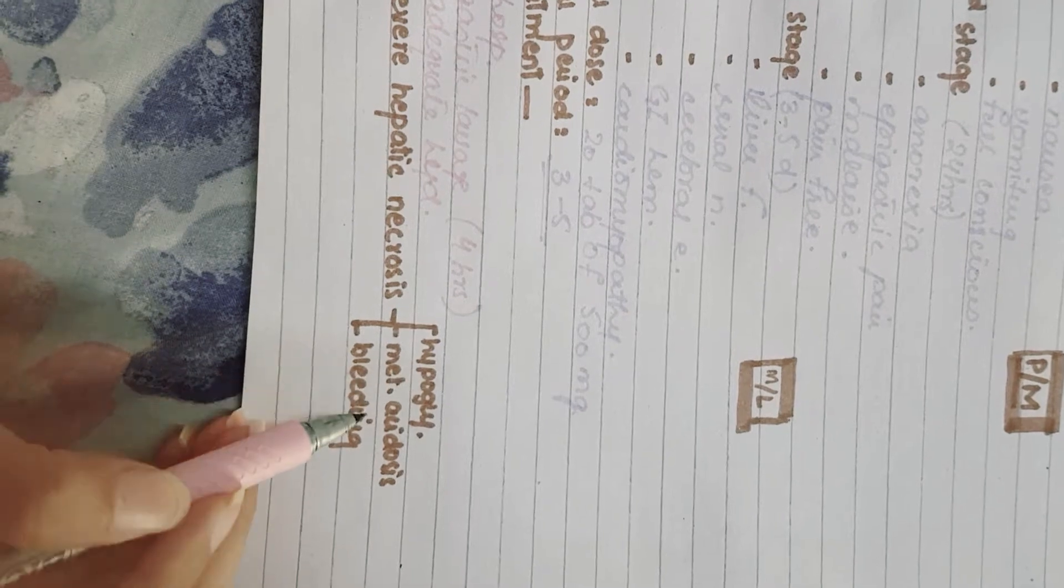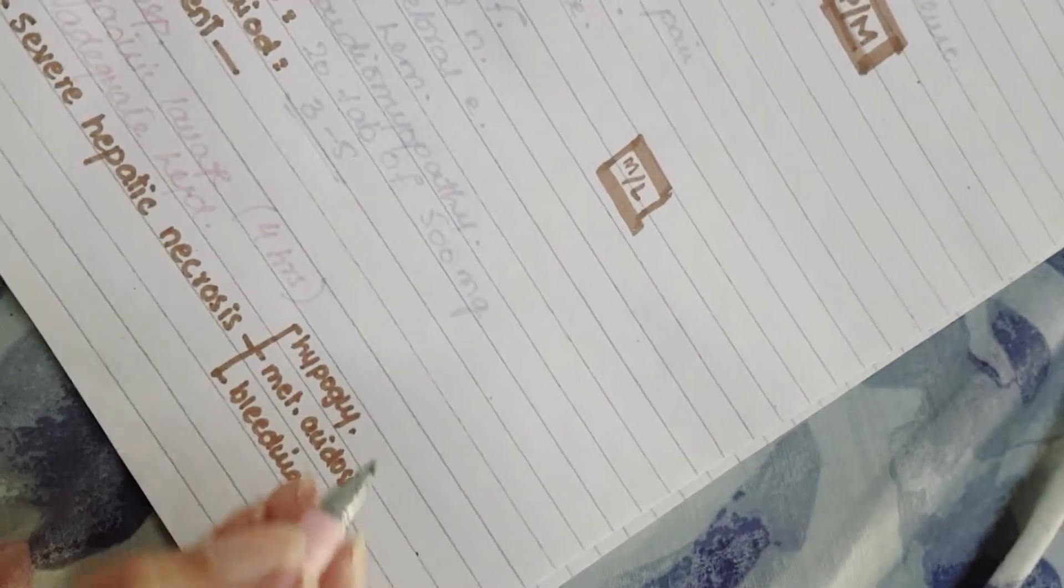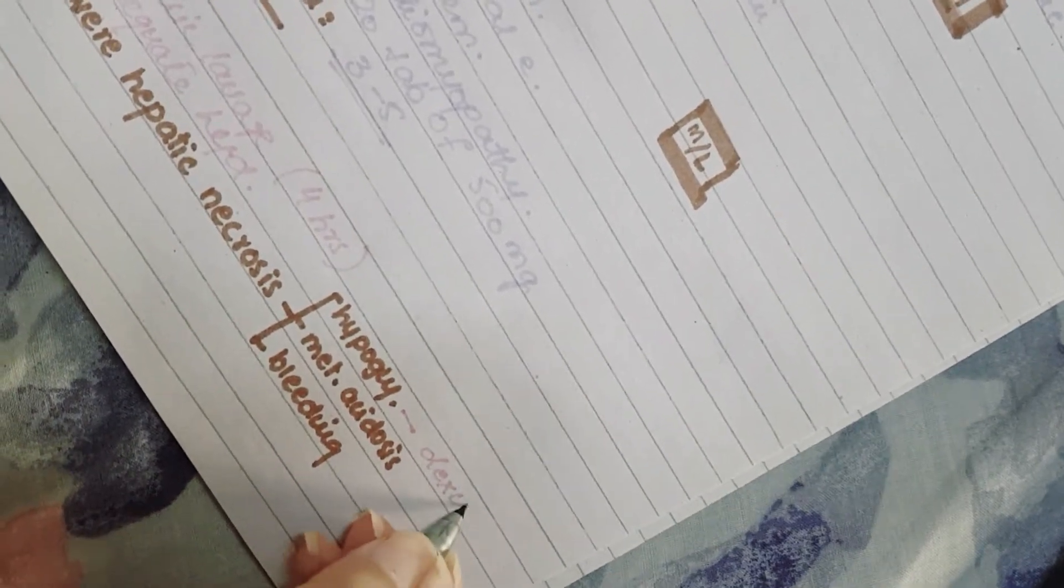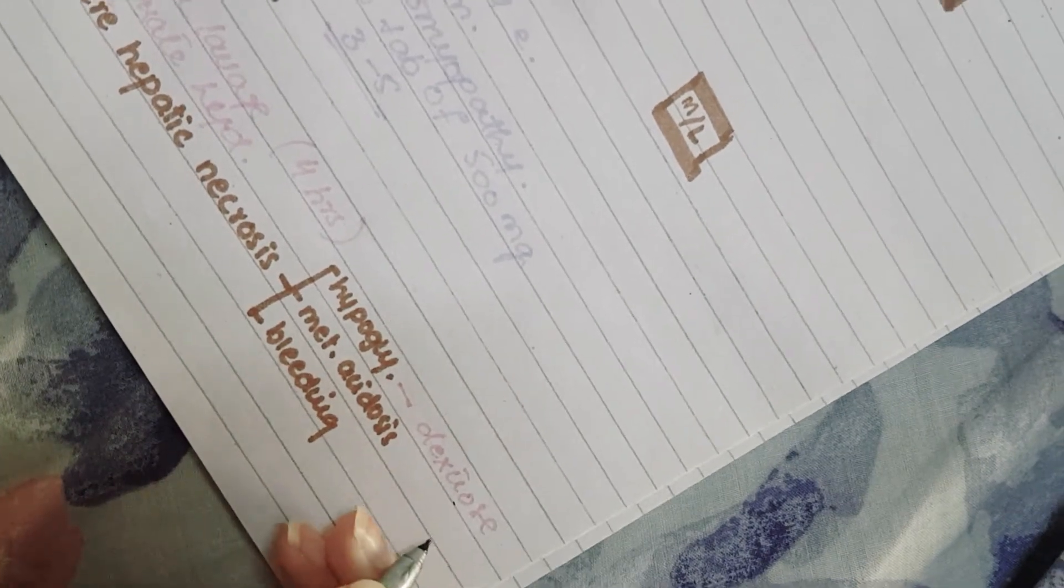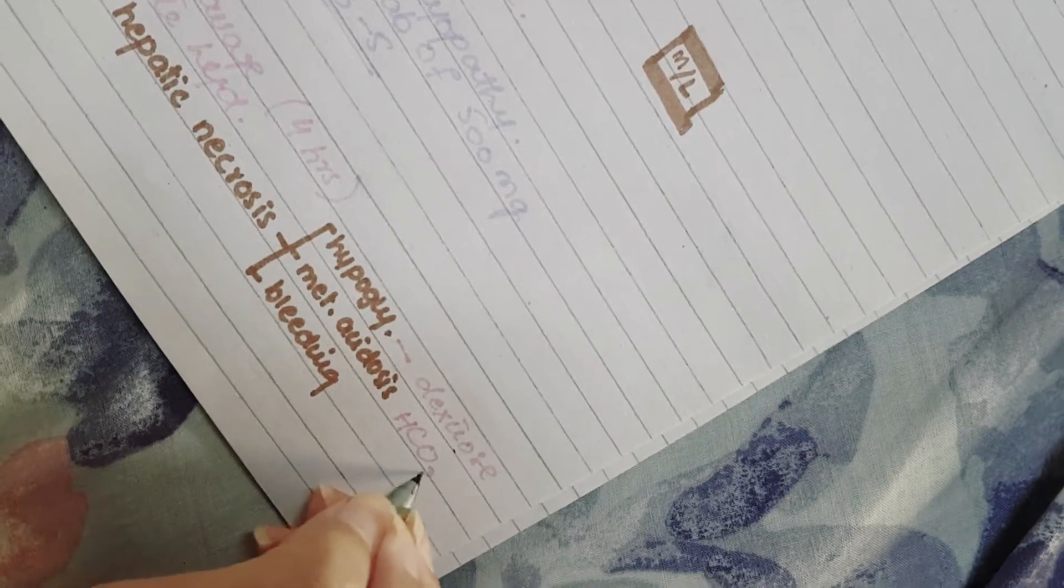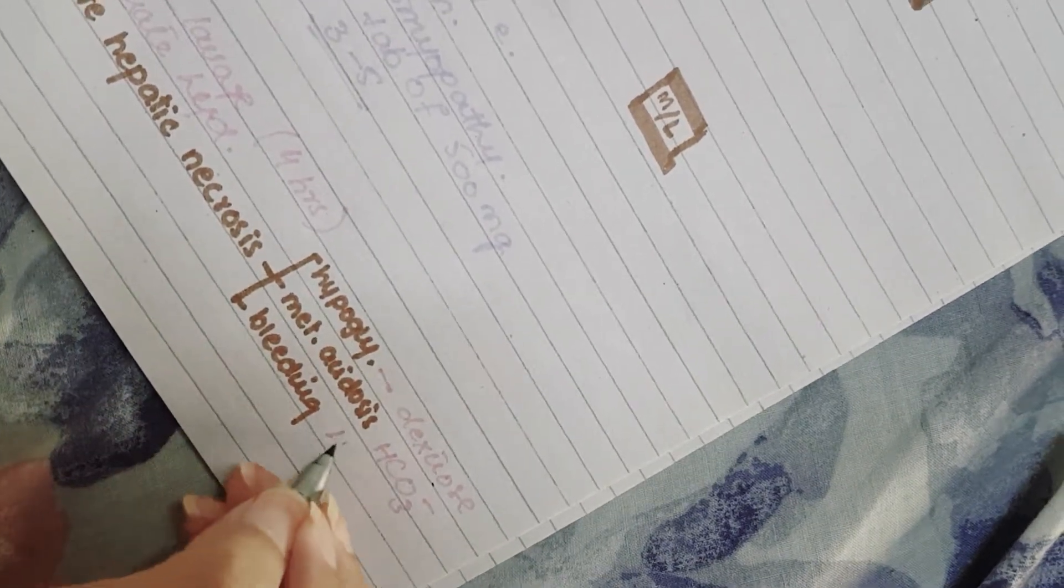The next complication that occurs is hepatic necrosis. This may lead to hypoglycemia, metabolic acidosis, and bleeding disorders. You need to treat all these symptoms differently: for hypoglycemia give dextrose infusion, for metabolic acidosis give bicarbonate infusion, and for bleeding give vitamin K.